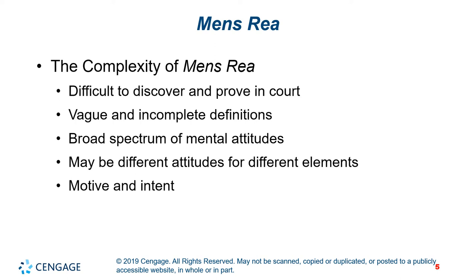We need to note one more complexity in mens rea, namely the relationship between mental attitude and motive. Experts disagree over the difference between motive and intent. They clarify the difference with an example: if a man murders his wife for her money, his intent was to kill, his motive was to get her money. Sometimes motive is relevant and sometimes it's not. Juries have sometimes refused to convict mercy killers of first-degree murder, even though the intent to kill was clearly there.